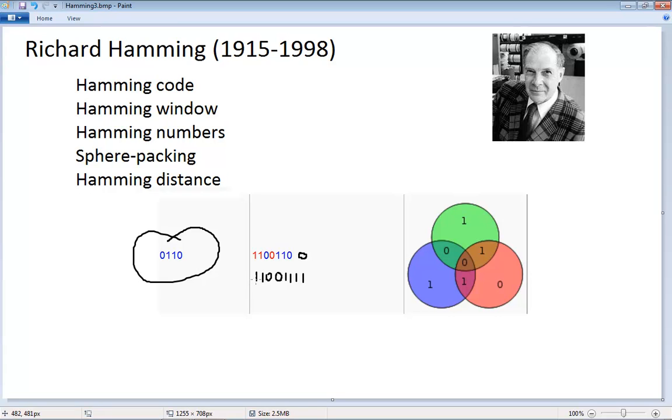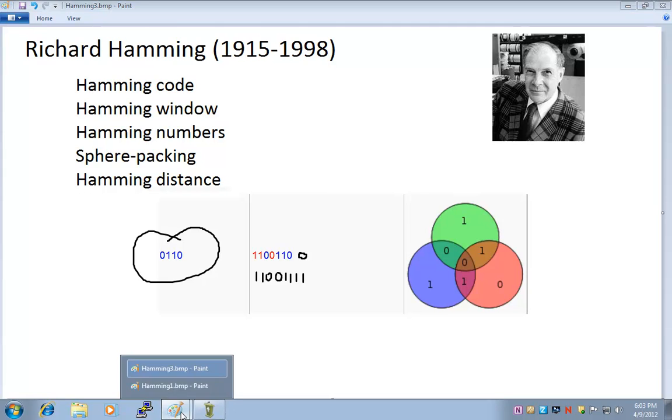If more than one bit gets changed, then you will need something more advanced, something like the Hamming code, which we'll discuss in just a moment.